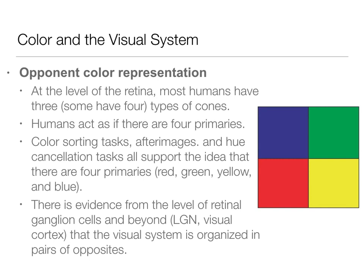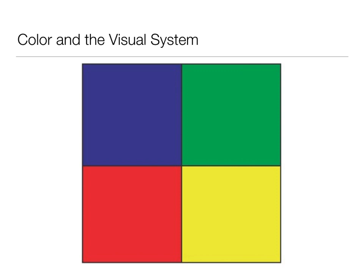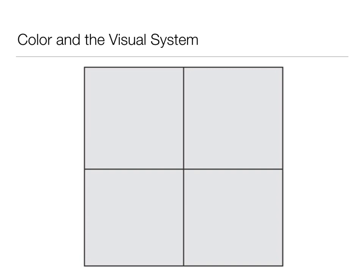Look at this picture — look at the center of where the four colors meet, and I'm going to have you look at it for 30 seconds. Just stay right there at the middle and don't move your eyes. When you look at the gray blocks, you should be able to see the opposites of all four of those colors — it'll look like the colors switched. That's representation of the opponent processing system: you'll see the opposite of the color you were looking at. Where you saw blue, you'll see yellow; where you saw green, you'll see red.